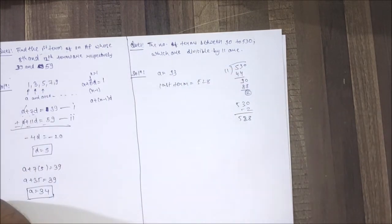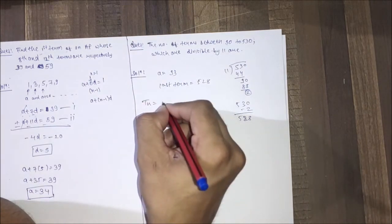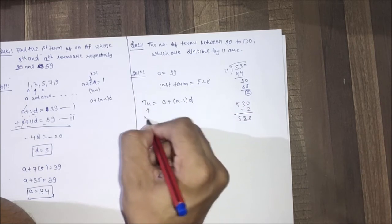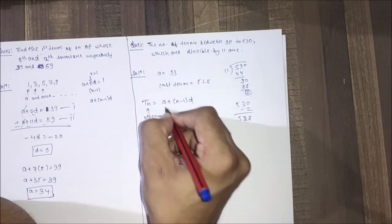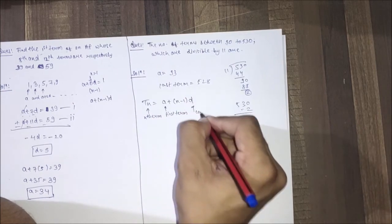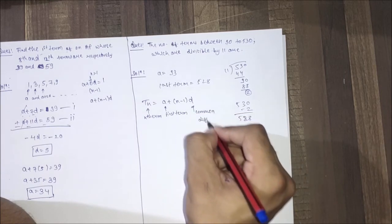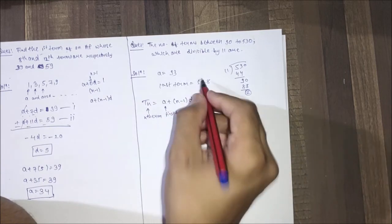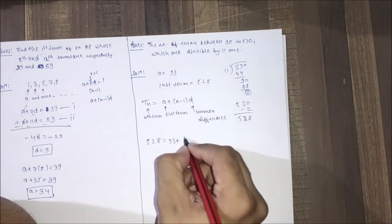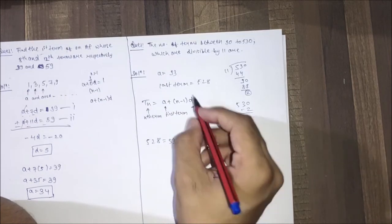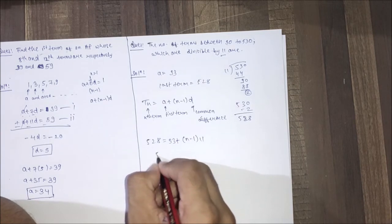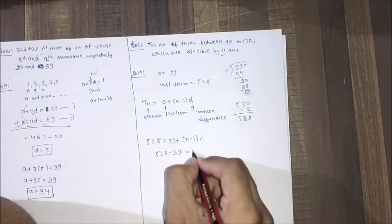We have discussed one formula: tn = a + (n-1)d, where tn is the nth term. So we know nth term equals 528, a equals 33, and we have to find the value of n. The common difference is 11. Let's solve it: 528 = 33 + (n-1)×11.